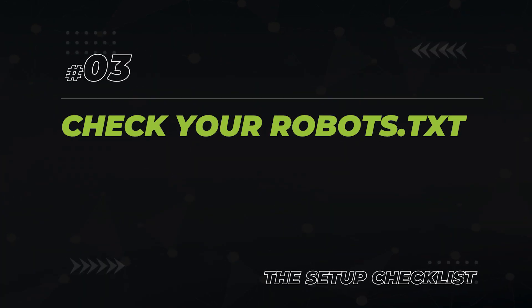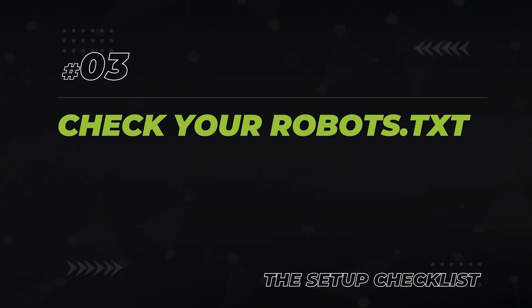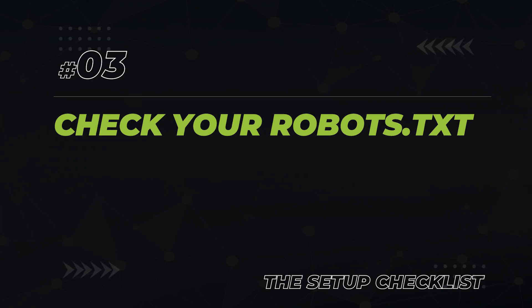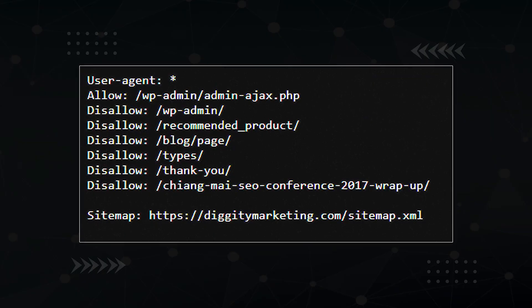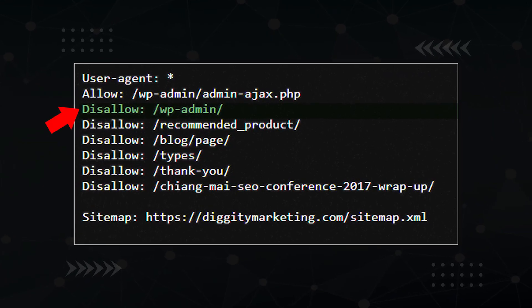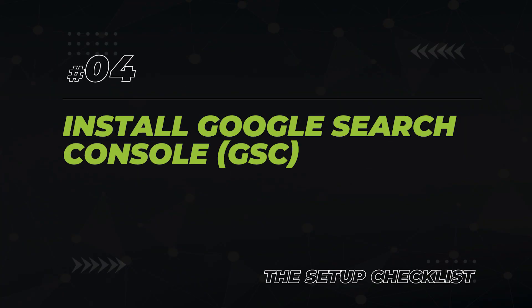Next on the list is to create a robots.txt file. This file is used to tell Google where they can and cannot go. For example, it's common to block Google from accessing your WordPress installation files. Make sure to check for this line in your robots.txt. You can find it at yourdomain.com/robots.txt.